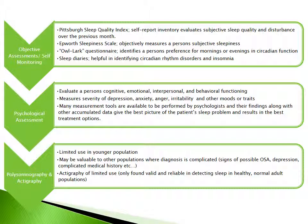Typically with insomnia a polysomnogram is not performed, but actigraphy may be used. With actigraphy, a person wears something that looks like a watch for a few days to track their activity. It may be valuable in complicated cases, but is of only limited use because it only tracks activity and does not truly identify when the person is asleep or awake.